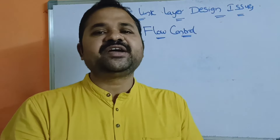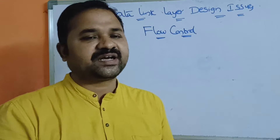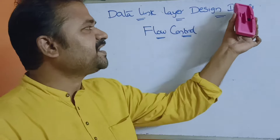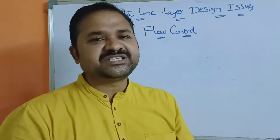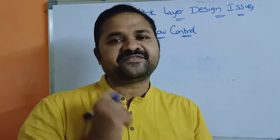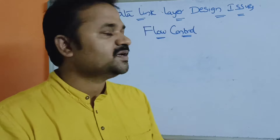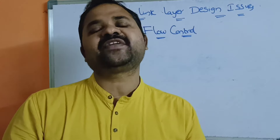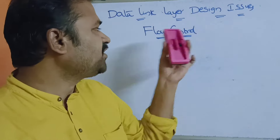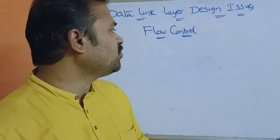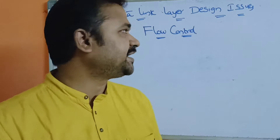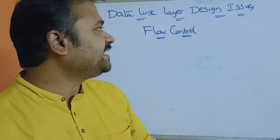In this video, we are going to discuss about data link layer design issues. Mainly we have four design issues: first one is services provided to the network layer, second one is flow control, third one is error control, and fourth one is framing. In this video, we are going to discuss about flow control, whereas in the upcoming videos we will see about the remaining three issues.